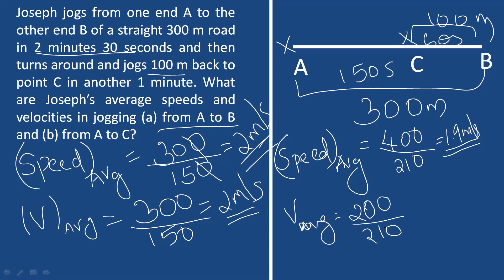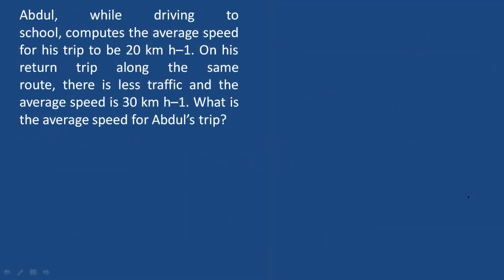Next question: Abdul's average speed for his trip to school is 20 km per hour. On his return trip along the same road, there is less traffic and the average speed is 30 km per hour. What is Abdul's average speed for his entire trip?